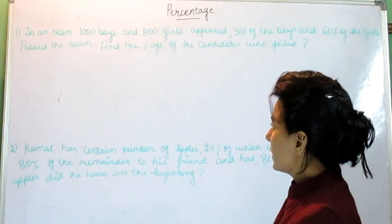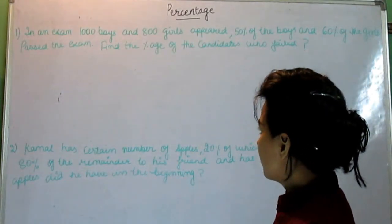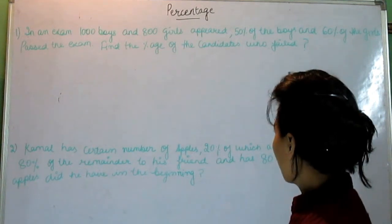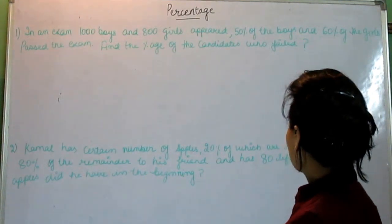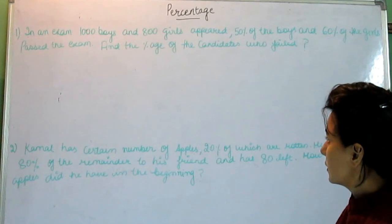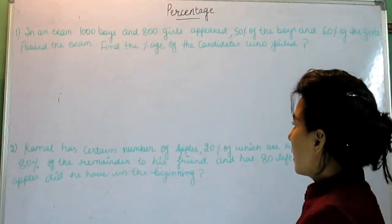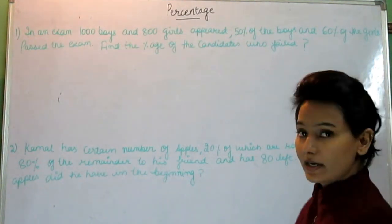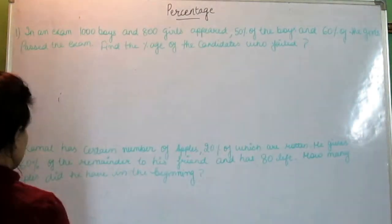The first question is: in an exam 1000 boys and 800 girls appeared. 50% of the boys and 60% of the girls pass the exam. Find the percentage of the candidates who failed.